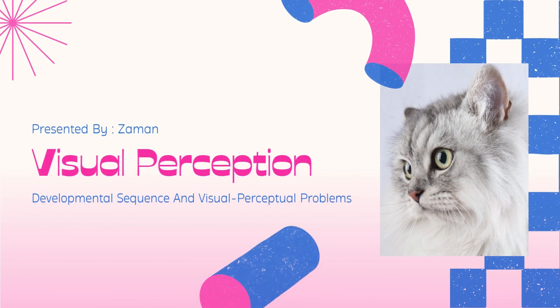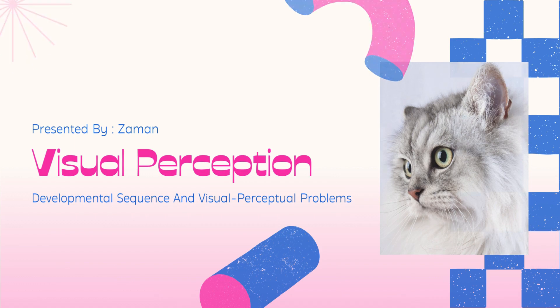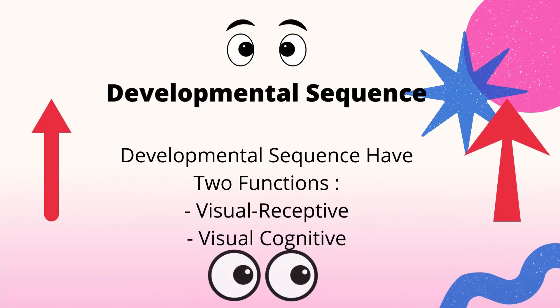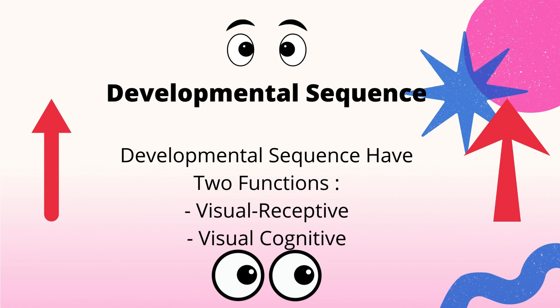Hello, Assalamualaikum. My name is Zaman from AGC, and today I would like to present about visual perception with the developmental sequence and visual perception problems. Let me start with developmental sequence, which has two functions: visual receptive and visual cognitive.